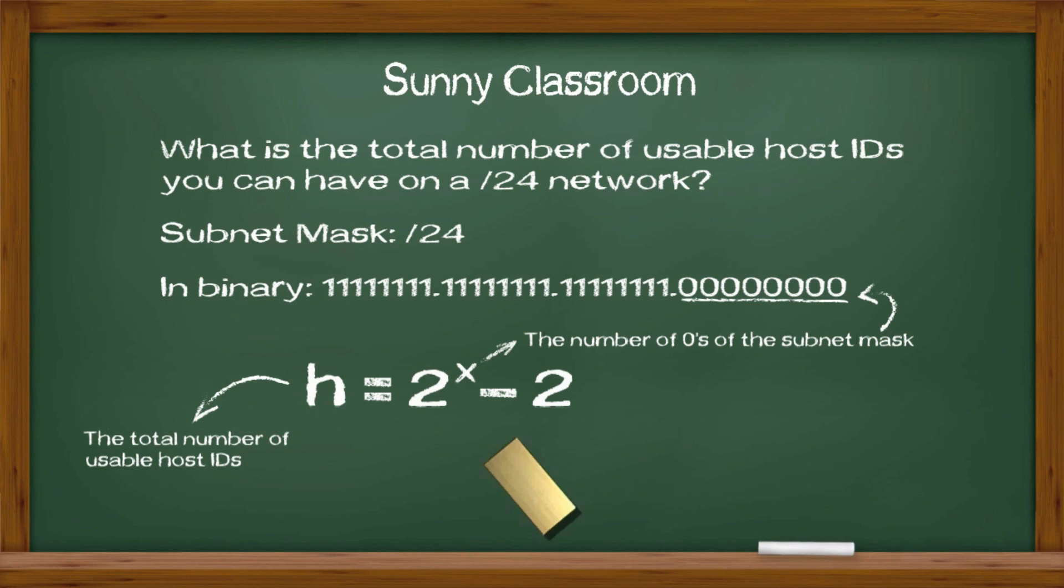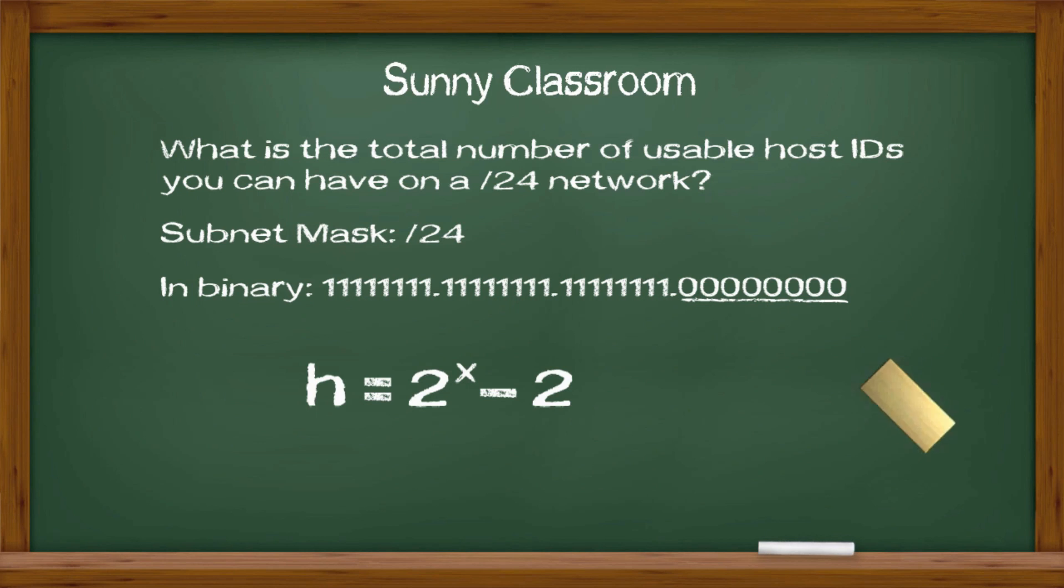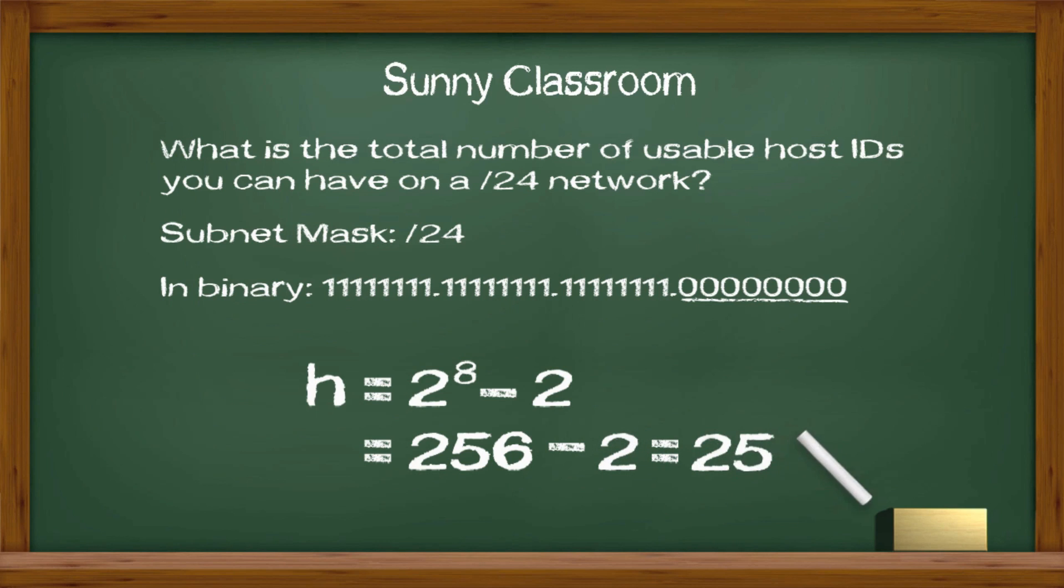In this example, x is 8 because there are 8 zeros, so we change x to 8. We do the calculation: 2 to the 8th power, we get 256. Then minus 2, we get 254.